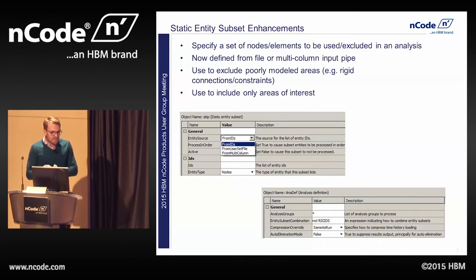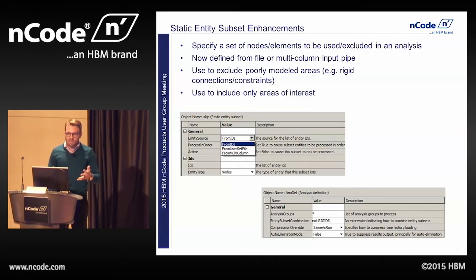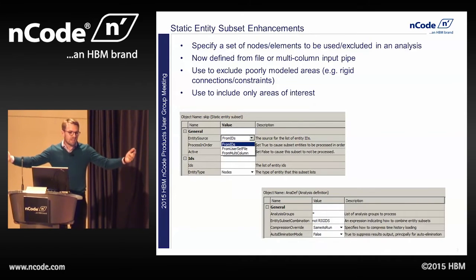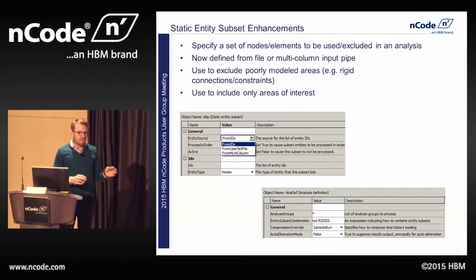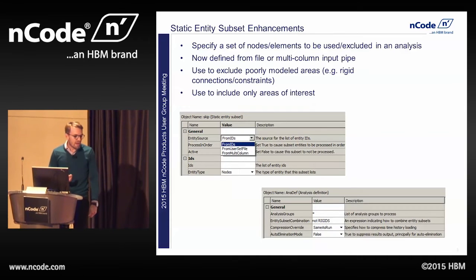The first thing I want to mention is something called static entity subsets. A static entity subset allows you to specify a node or set of nodes or elements that can either be used or excluded in an analysis. So if you've got a model with a million elements and you're only interested in a small area, there's no need to analyze the entire model. You can create a user group or enter a specific node.